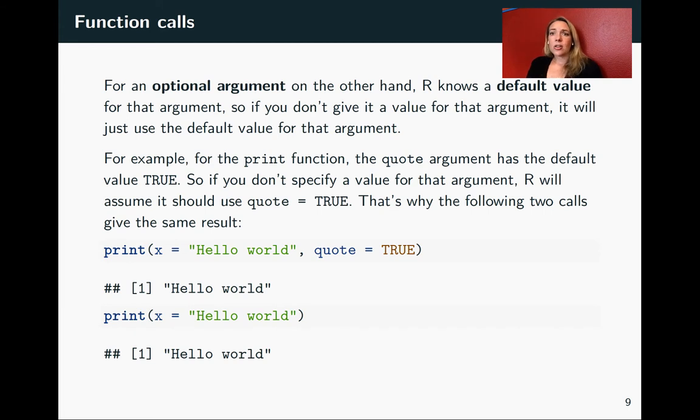For optional arguments, though, R already has a value it will use if you don't set something else. For those, if you're fine with the default, you can run without specifying those arguments in the function. The quote that we looked at was an example there. The default for quote is true. So you can see that we get exactly the same output whether we set quote equals true or whether we leave it off when we run that function, because R just goes to the default value.